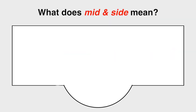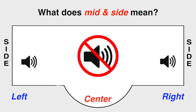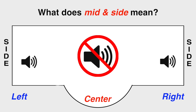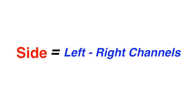Now the sides. The sides are all the stereo information in the audio without hearing any mono or center information. The sides of your audio are what give your sound a wider and more spacious sound. To get the side information, we use the equation: side equals left minus right channels.